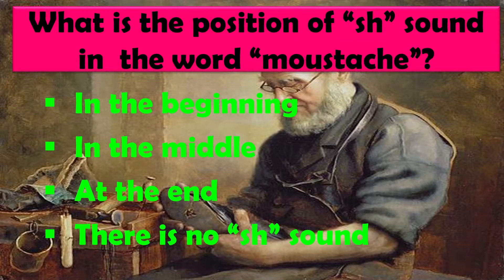What is the position of the SH sound in the word 'mustache'? Options: In the beginning, in the middle, at the end, or there is no SH sound. The right answer is at the end, kyunki mustache mein US se SH bana hai aur CH se SH bana hai — both are different. Hindi mein teen tarah ke SH hote hain, isi tarah English mein bhi alag-alag tarah ke SH hote hain.